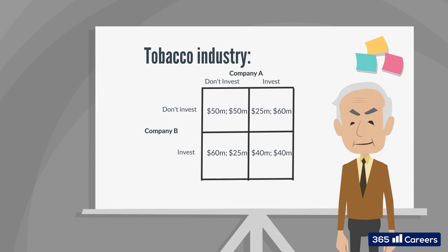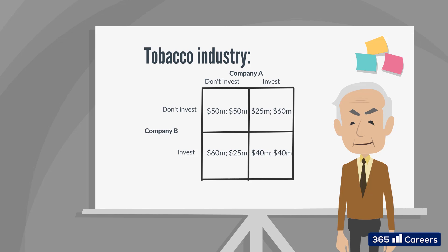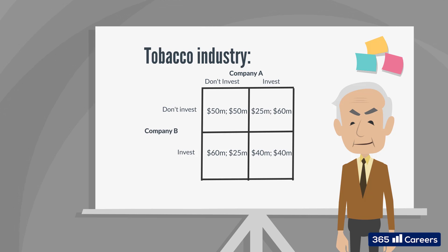Let's use game theory to describe this situation. We'll imagine there are only two companies operating in the tobacco market. The outcomes they may choose are: win $50 million each without spending on advertising. If Company A advertises and Company B doesn't, Company A wins $60 million and Company B wins $25 million. In the opposite scenario, the outcome reverses. And finally, if both companies advertise, each wins $40 million.